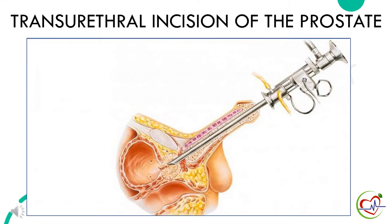The next procedure is transurethral incision of the prostate. A lighted scope is inserted into the urethra and the surgeon makes one or two small cuts in the prostate gland, making it easier for urine to pass through the urethra. This is an option for small or moderately enlarged prostate glands, especially if there is a health problem that makes other surgeries too risky.